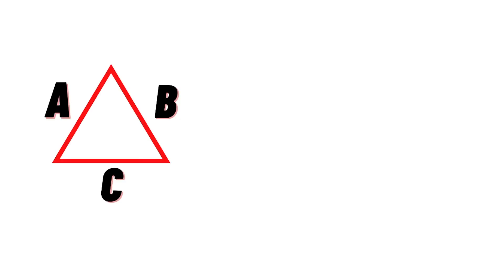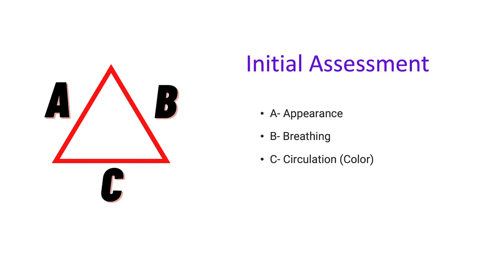We use the Pediatric Assessment Triangle or PAT to make our initial assessment during our first quick from-the-doorway observation of the child — appearance, breathing, and color — within a few seconds after encountering the child. Here we focus on what we can see and hear before touching the child to help identify the general type of respiratory, circulatory or neurological issues that will require urgent treatment.